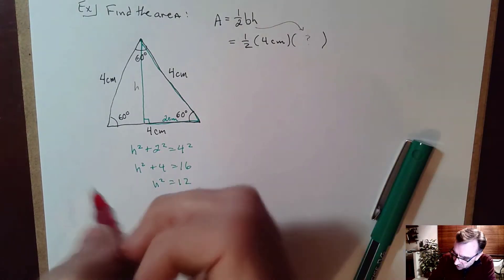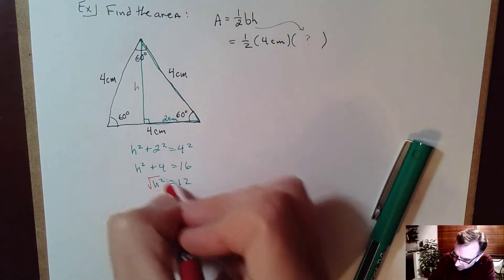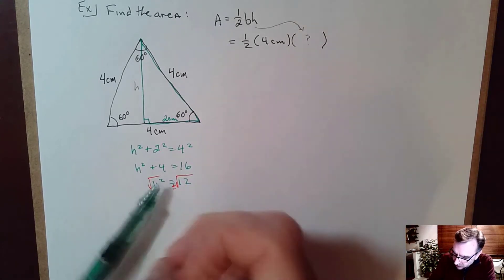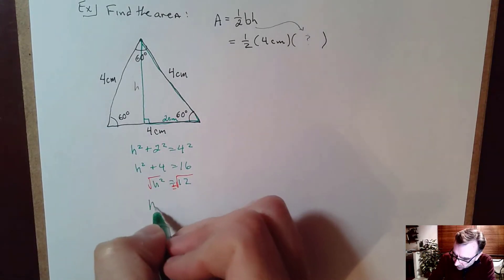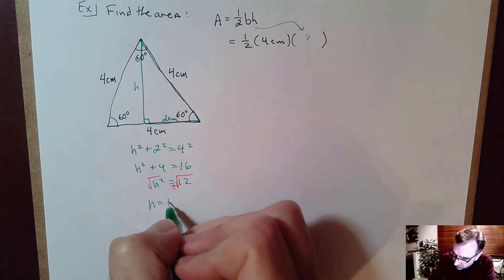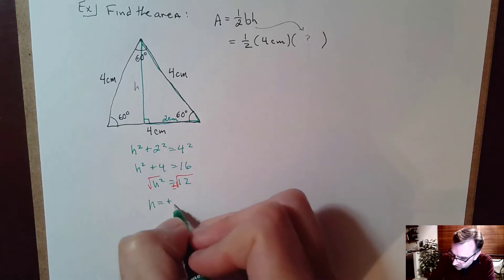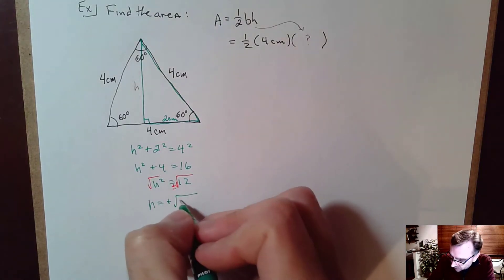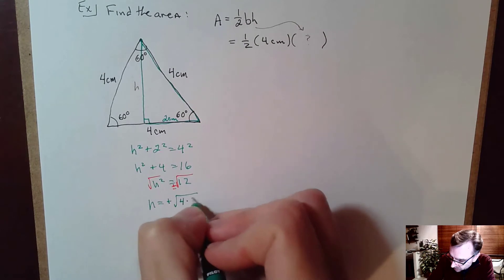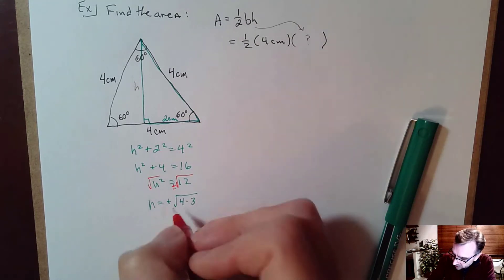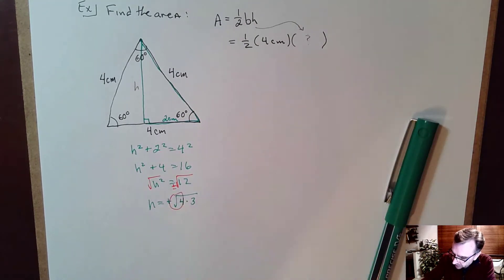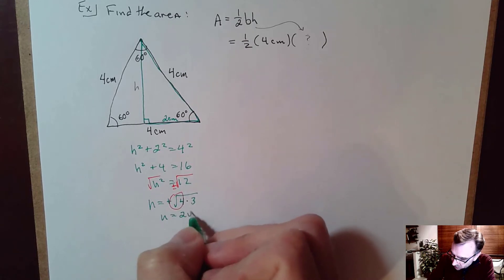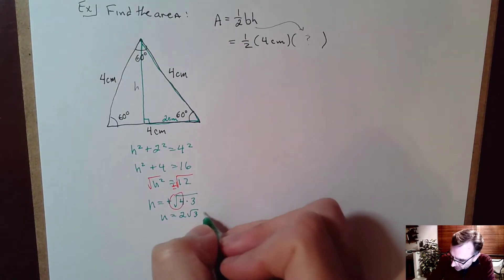Subtracting 4, H squared equals 12. Taking the square root of both sides — don't forget the plus or minus — we get H equals, well, since it's geometry, I'm going to use plus the square root of 12. Now, 12 is 4 times 3, so the exact value for the height is 2 square root of 3 centimeters.